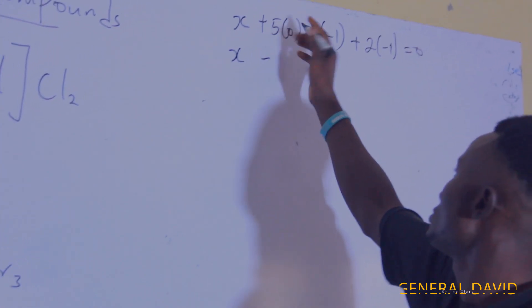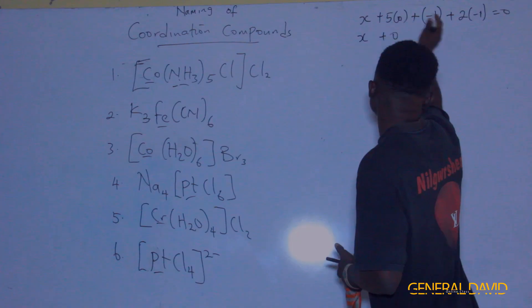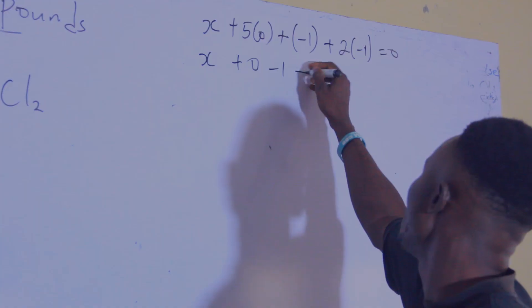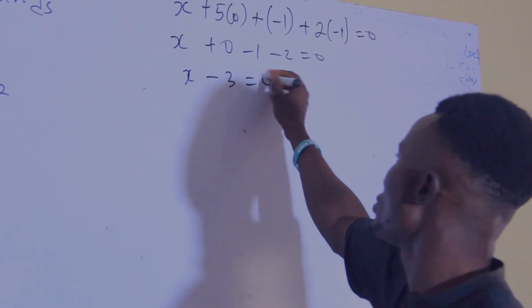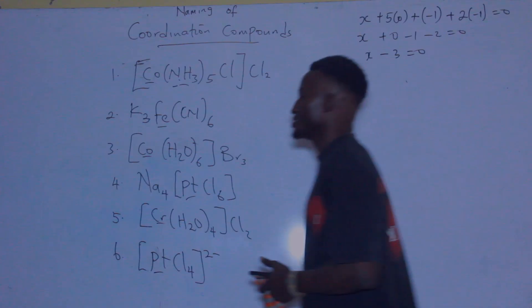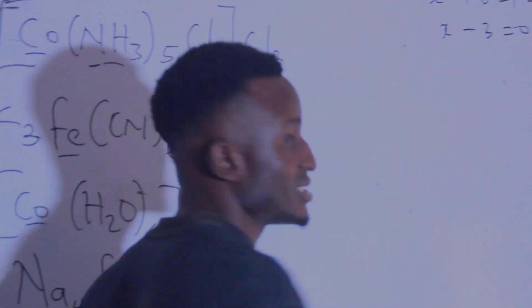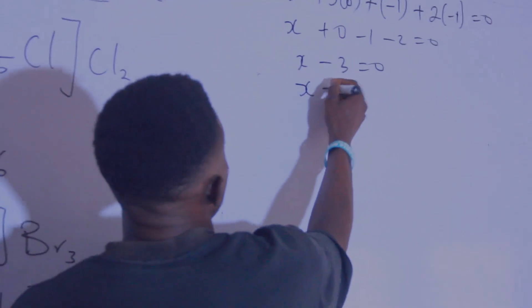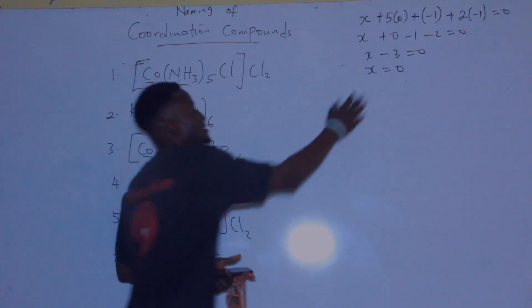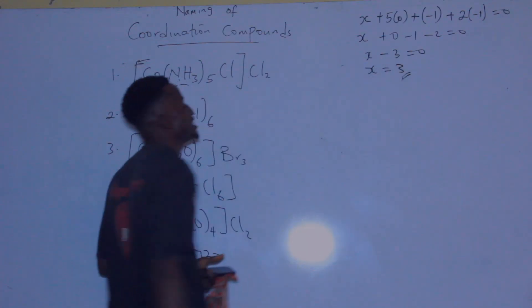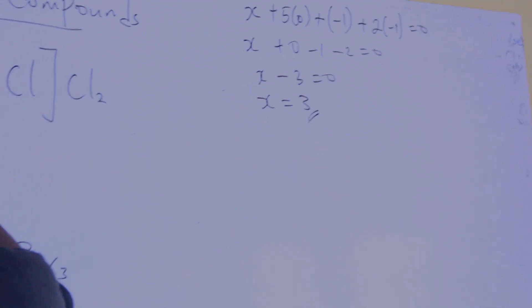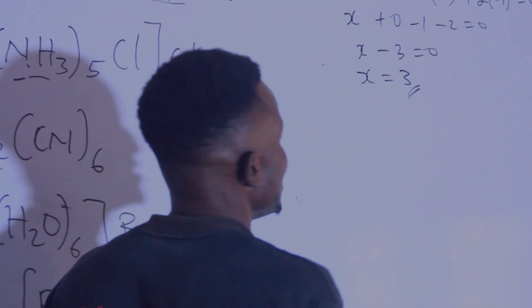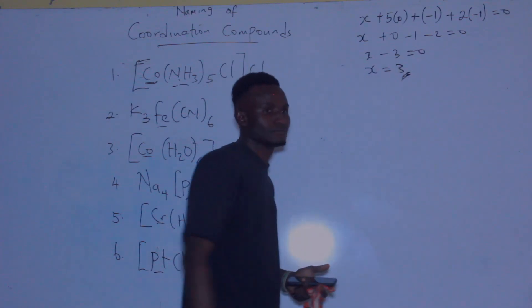So we have X + 0 − 1 − 2 = 0, which gives X − 3 = 0, therefore X = 3. That shows the oxidation state of cobalt here is equal to three.